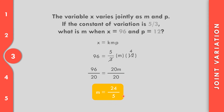To get 24 over 5, we find the lowest term of 96 over 20. Dividing both numerator and denominator by 4 gives 24 over 5.